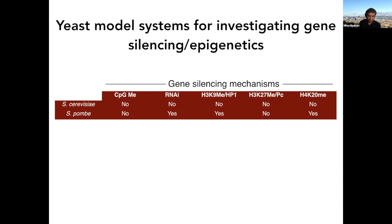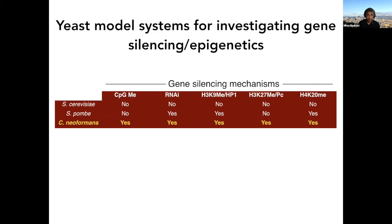S. pombe has three out of these five silencing systems, but the organism I want to tell you about today — a yeast system — has all of these gene silencing mechanisms intact. So what is C. neoformans? It stands for Cryptococcus neoformans.